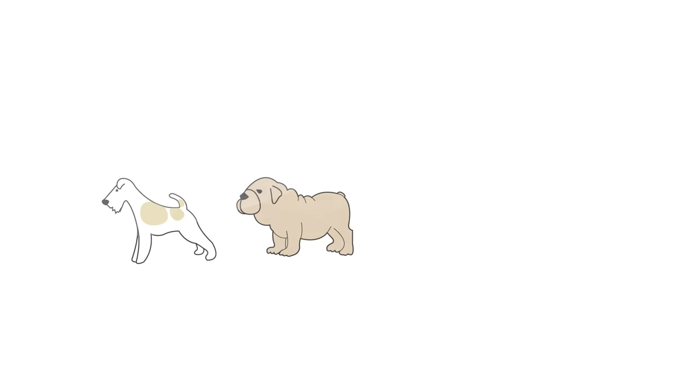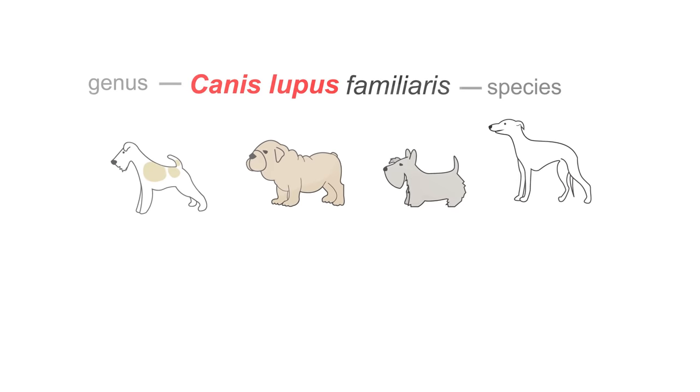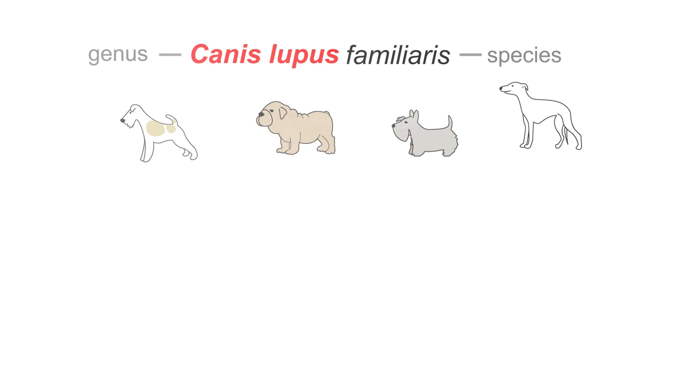For example, all domestic dog breeds belong to the same species called Canis lupus familiaris. Other members of the dog family that are closely related but not the same species will share the higher group name, the genus name, but have a different species name.